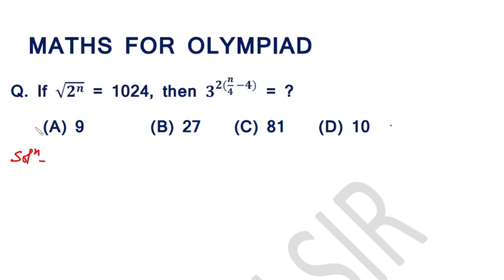Namaskar. This is the 24th video of the series 'Maths for Olympiad.' Today's question is: if the square root of 2 raised to the power n is equal to 1024, then 3 raised to the power (2 into n over 4 minus 4) is equal to what? The options are 9, 27, 81, and 10. Let us start.